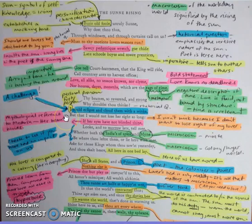But he then follows this statement by saying, but that I would not lose her sight so long. And here is this statement of devotion to his love, that he won't close his eyes, because he is so engrossed by his love, that he can't bear to take his eyes off her. And over here I've stated that there is a mythological reference to Medusa, and that her beauty blinds, and it's so compelling.